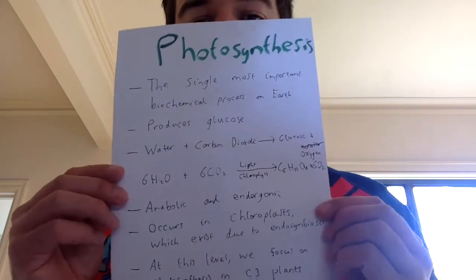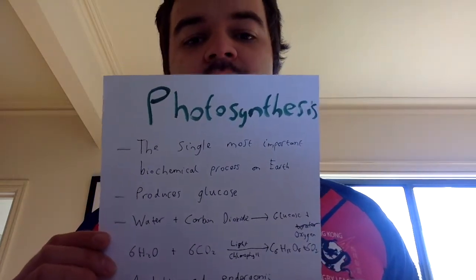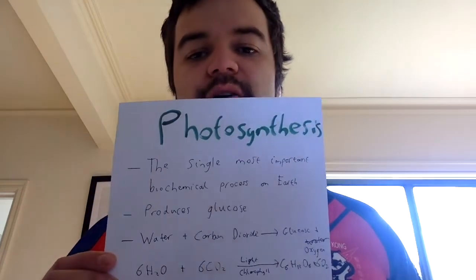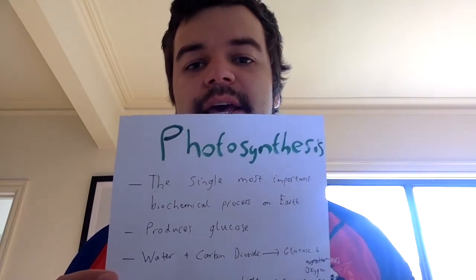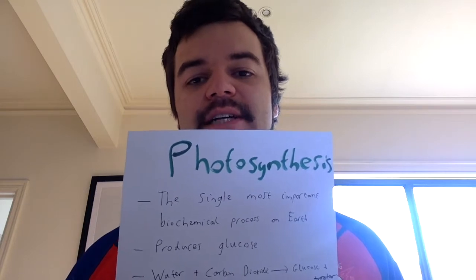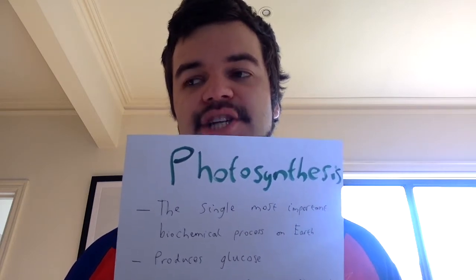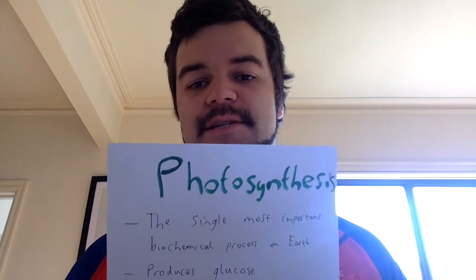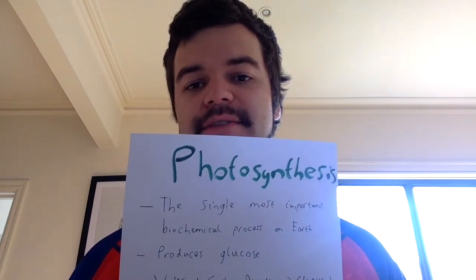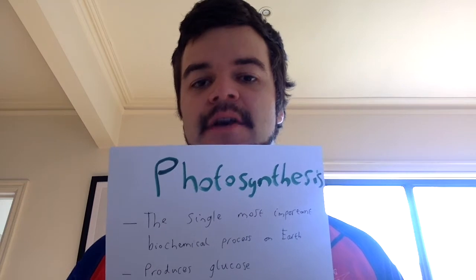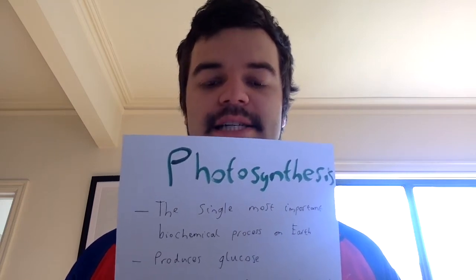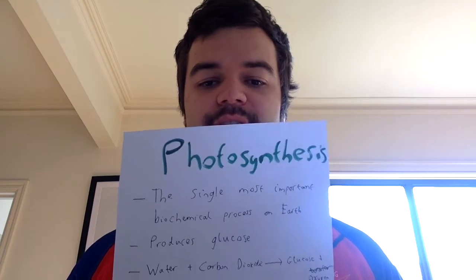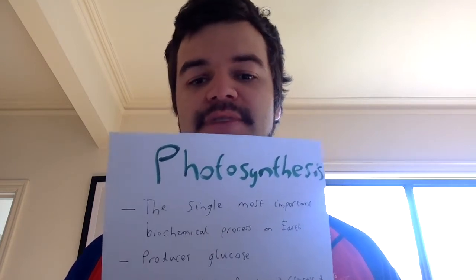Looking at photosynthesis, just to sum up, here are some key points to go through. We often talk about it as the single most important biochemical process on Earth. Photosynthesis provides glucose and everything relies on glucose for respiration. Every living thing either needs to acquire glucose through doing photosynthesis, or eating something that does photosynthesis, or eating something that eats that. So everything ultimately relies on photosynthesis to produce glucose, which is then used for respiration, which we looked at in a previous video.